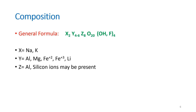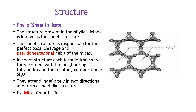The general formula of the mica group is: X₂ Y₄₋₆ Z₈ O₂₀ (OH, F)₄. Here X represents sodium and potassium; Y represents aluminum, magnesium, iron (Fe²⁺, Fe³⁺), and lithium; and Z includes aluminum and silicon ions.